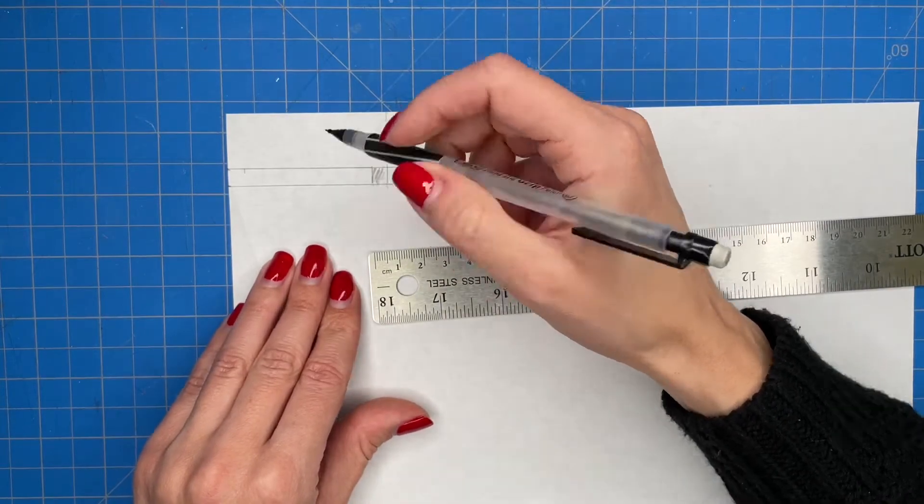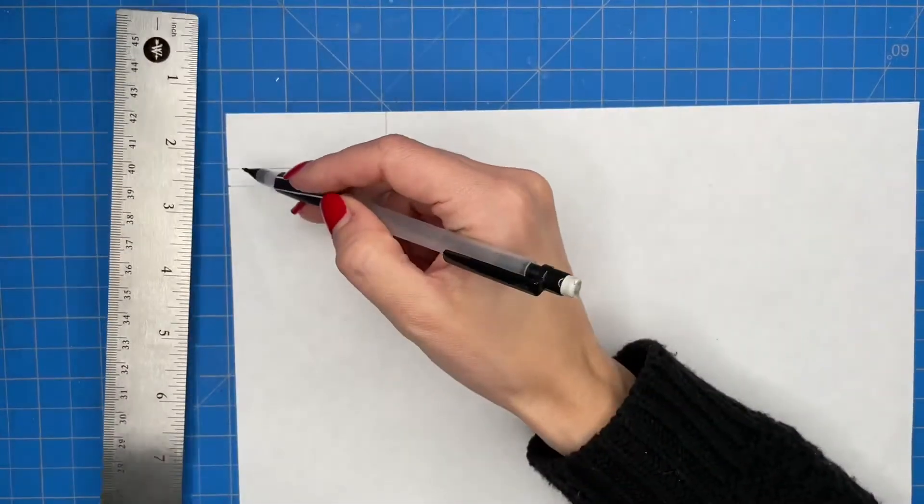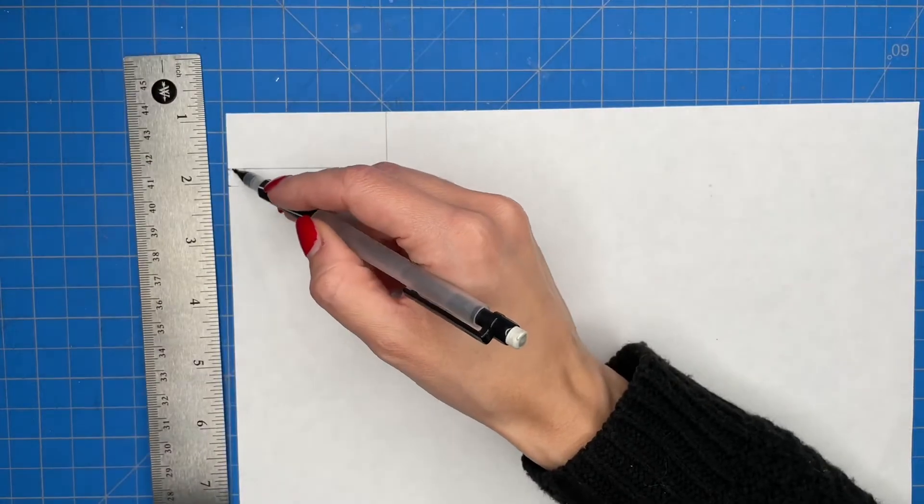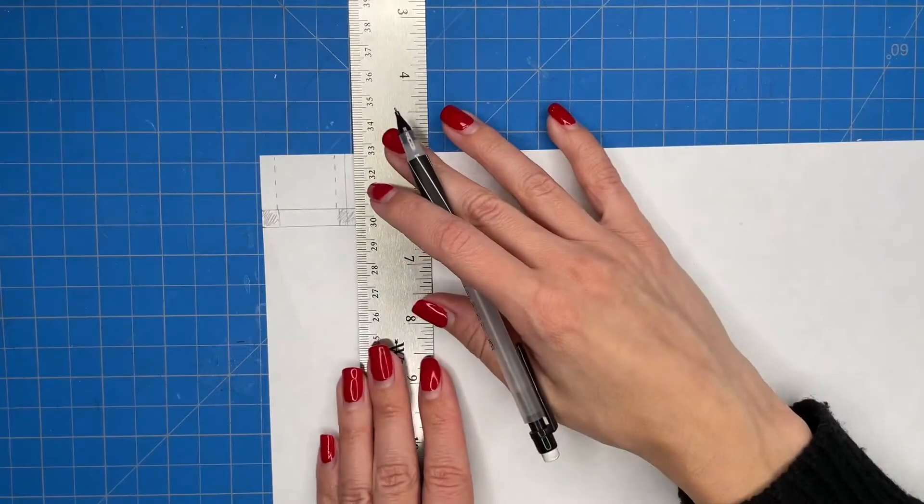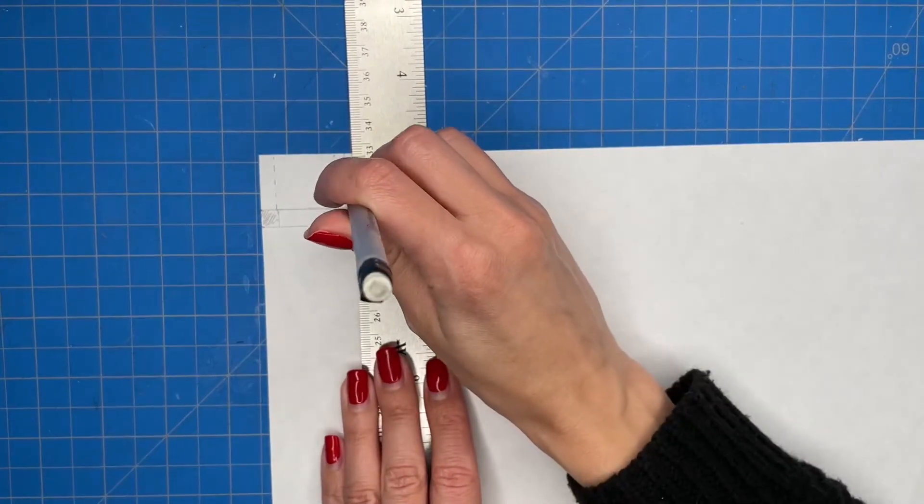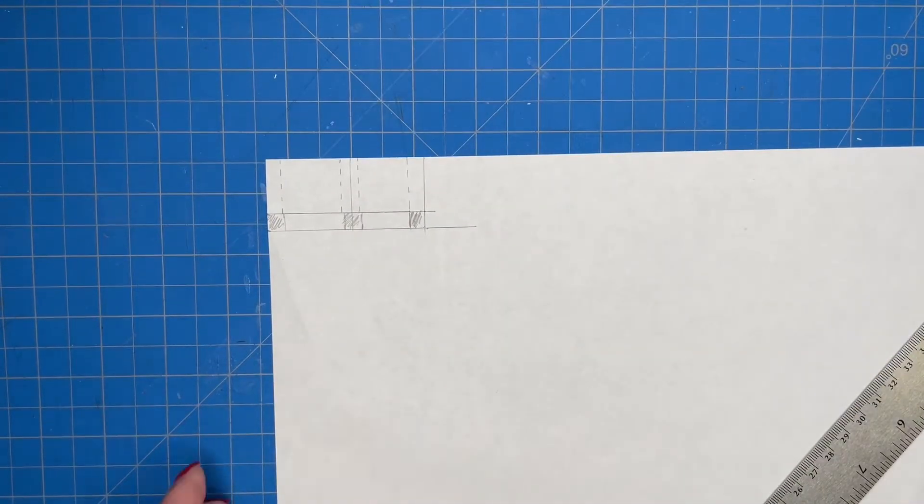I'm shading in these corners since that is what I will be cutting out once I am done. I am adding in these little dash marks just to indicate where I will be folding the paper later.